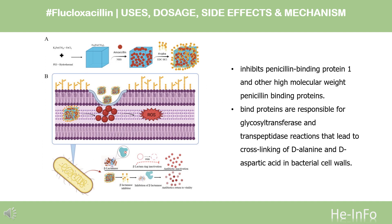By binding to specific penicillin-binding proteins (PBPs) located inside the bacterial cell wall, flucloxacillin inhibits the third and last stage of bacterial cell wall synthesis. Cell lysis is then mediated by bacterial cell wall autolytic enzymes such as autolysins. It is possible that flucloxacillin interferes with an autolycin inhibitor.